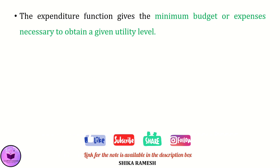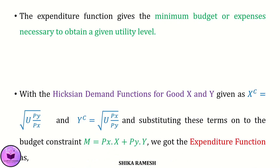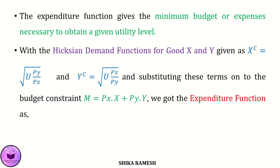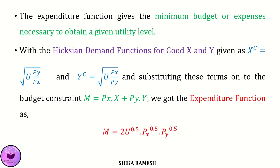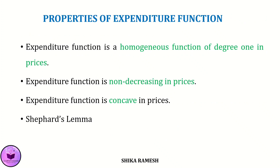The expenditure function gives the minimum budget or expenses necessary to obtain a given utility level. With the Hicksian demand functions for goods x and y given and substituting these terms onto the budget constraint, we got the expenditure function as m = 2u^0.5 × px^0.5 × py^0.5. We also saw that the properties of expenditure functions are: it is homogeneous of degree 1 in prices, non-decreasing in prices, concave in prices, and finally Shepherd's Lemma.